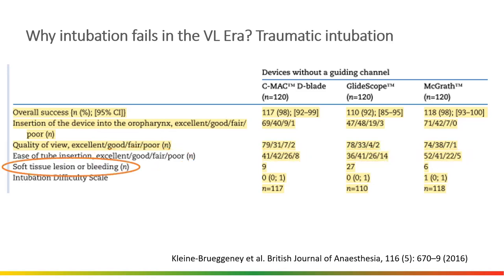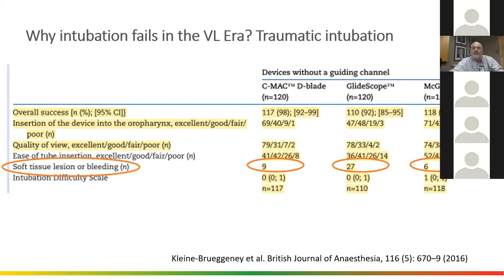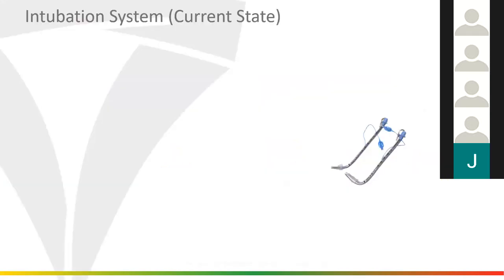Another important finding: soft tissue lesion and bleeding — this is the bend and jam. You get the tube in, but what's the cost? Nine out of 120 patients were injured with the D-blade, 27 with the GlideScope, fixed with the McGrath. We should be able to get these down to zero in the future.